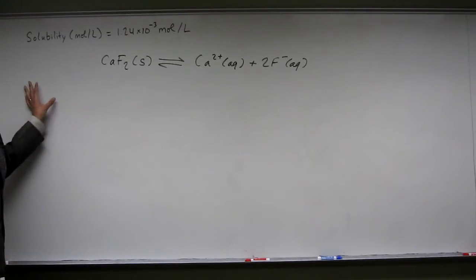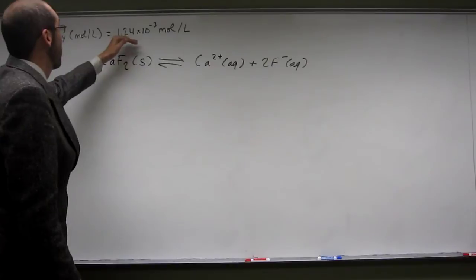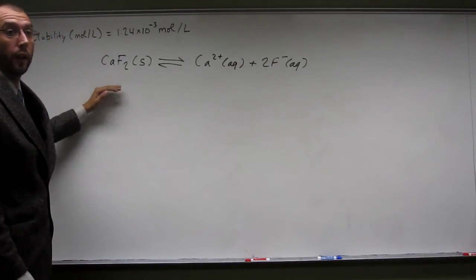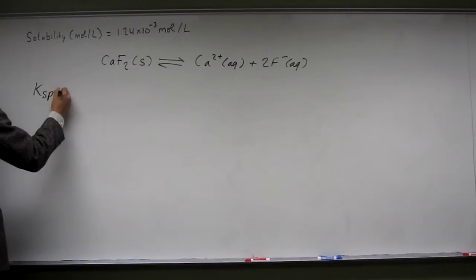Now we want to figure out what's the concentration of each of these particular ions given the concentration of calcium fluoride. Why would we need to do that? Because we're looking for Ksp, so in this case, the Ksp equation is going to be what?